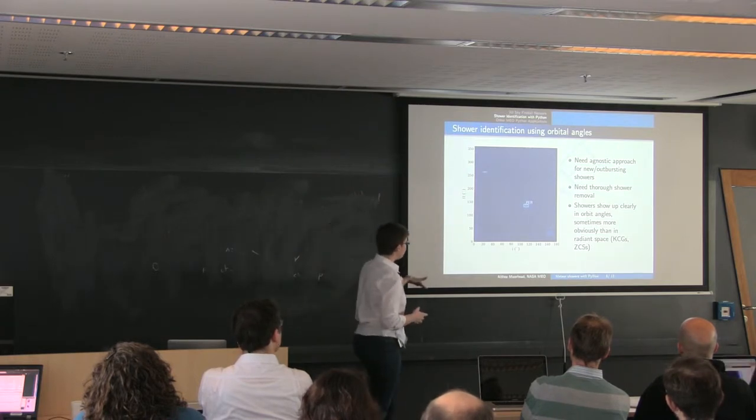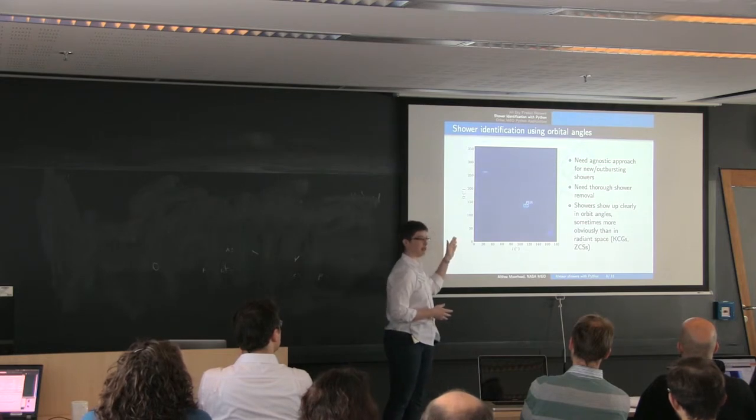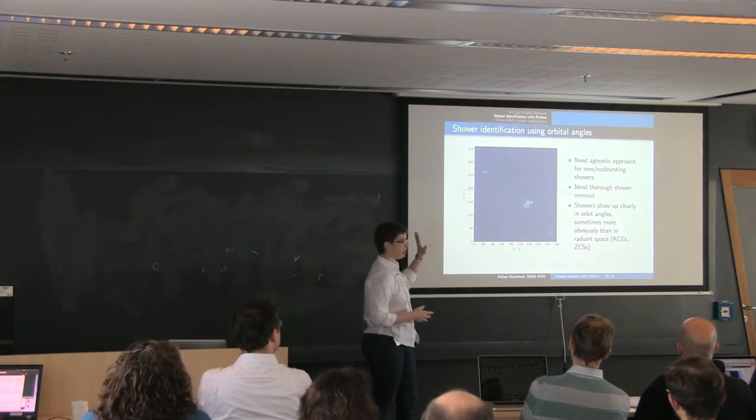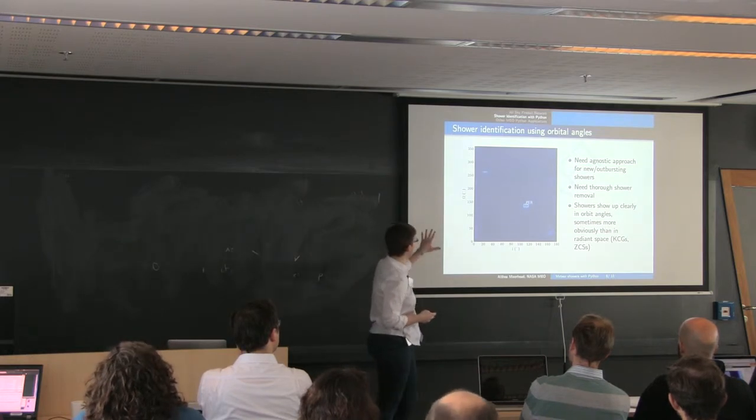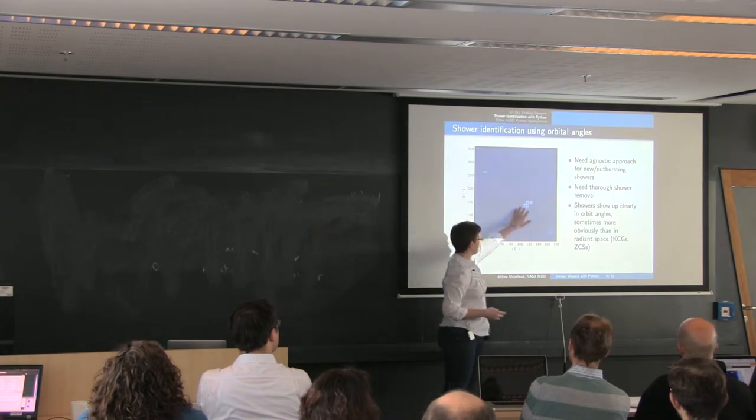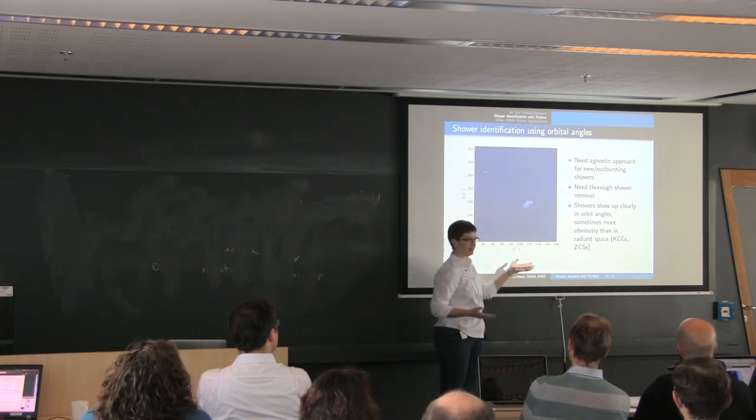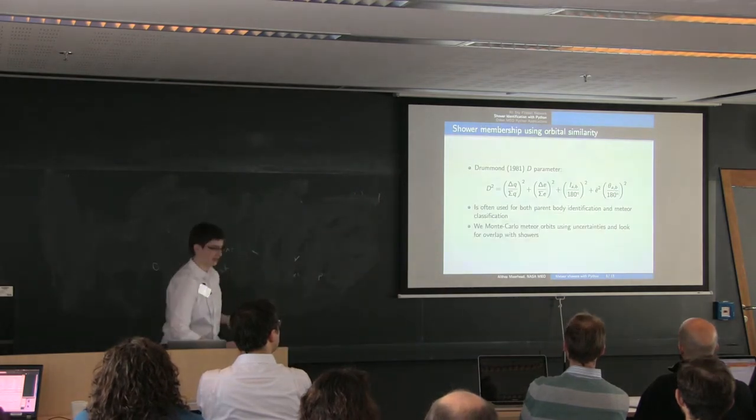And this is one visualization of that. You're looking at the inclination versus ascending node. There's a density heat map of all 20,000 meteors from the two systems. And you'll see that there are definitely concentrations within here. And here the Perseids are our strongest peak, as you might expect.